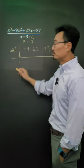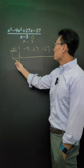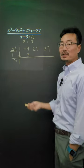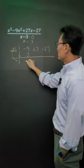First, bring down the 1. Take the 3, multiply it to the 1, giving us 3. Add up and down, we get negative 6.